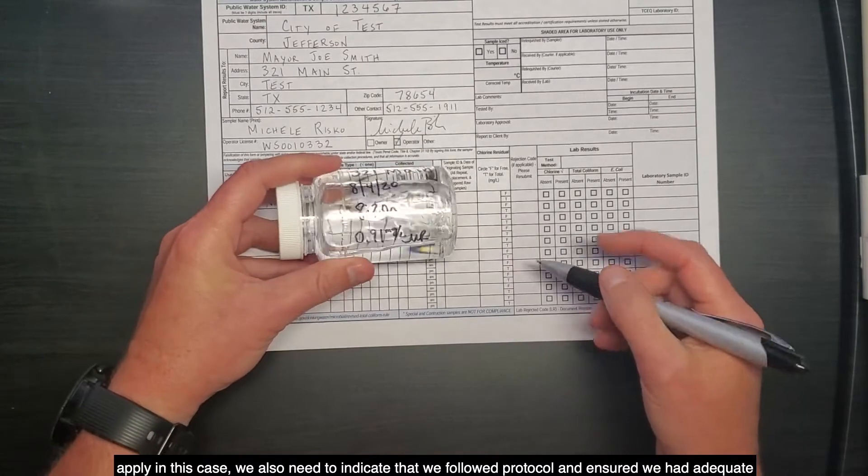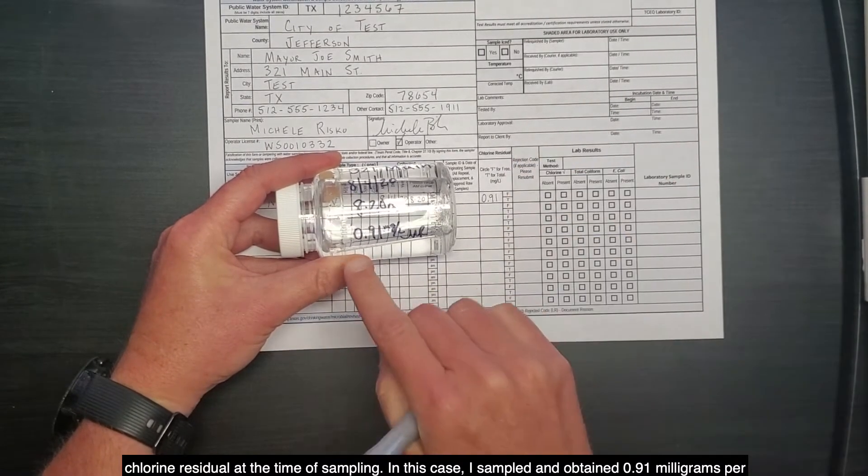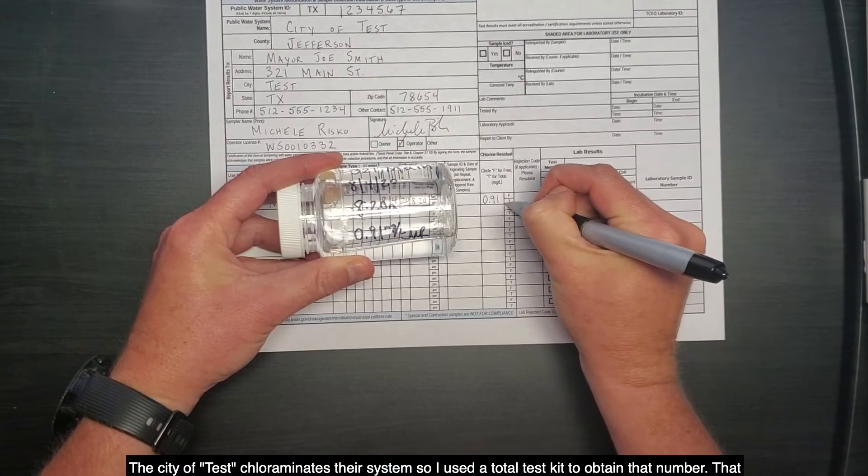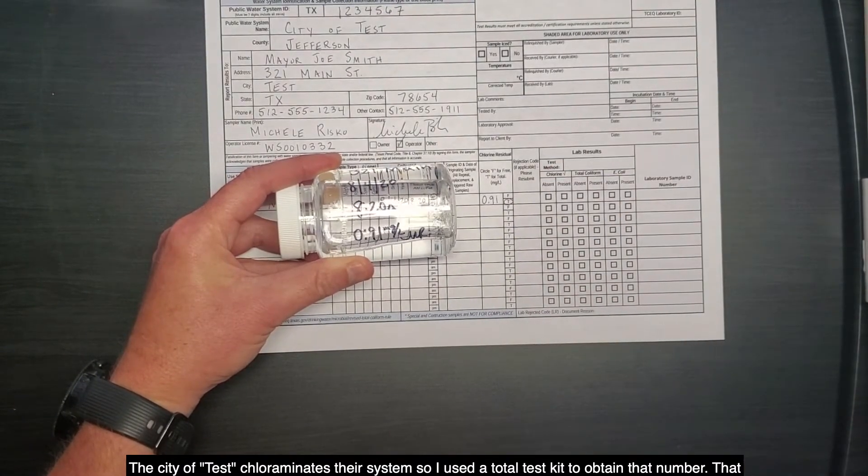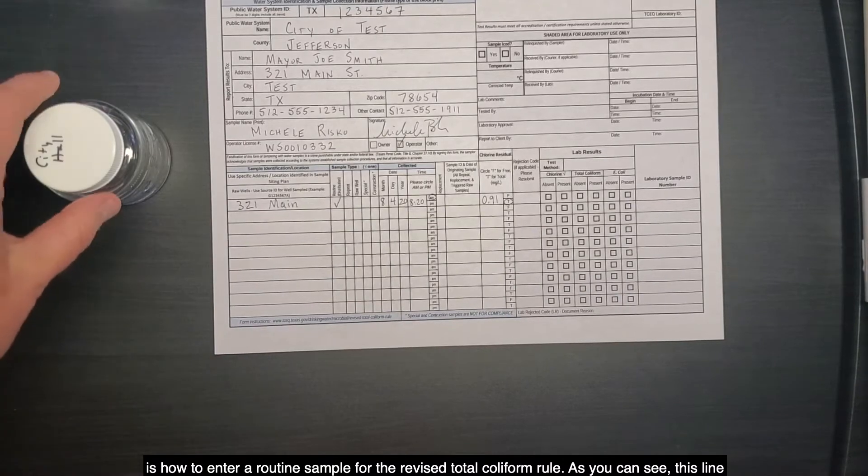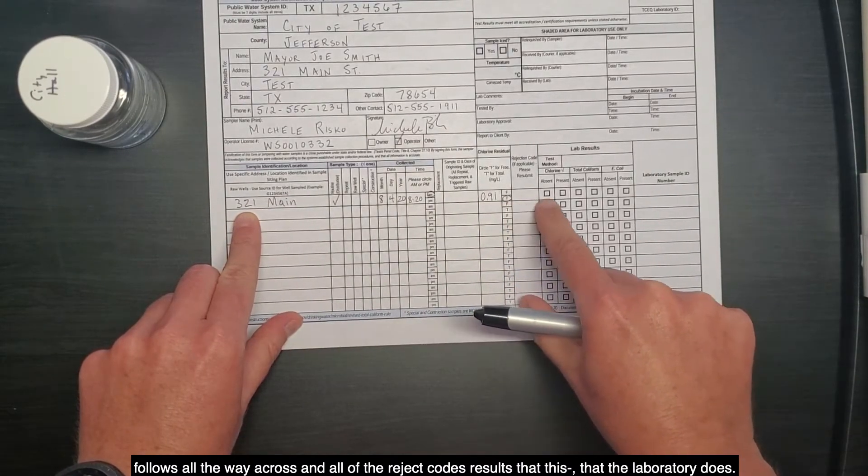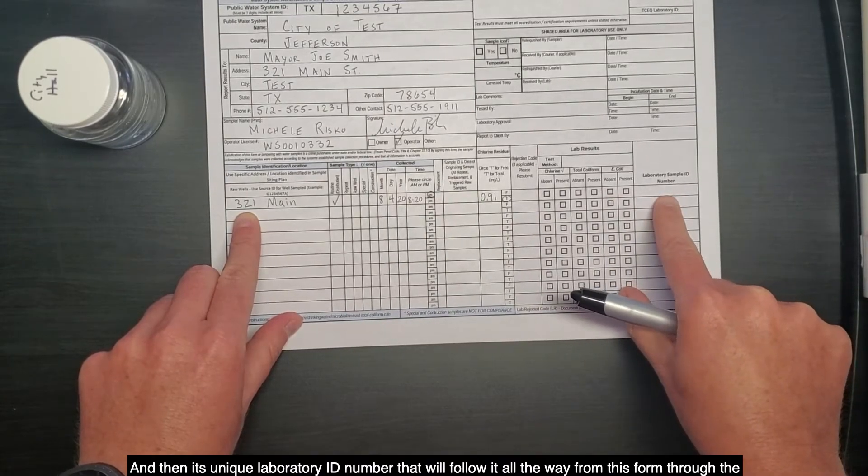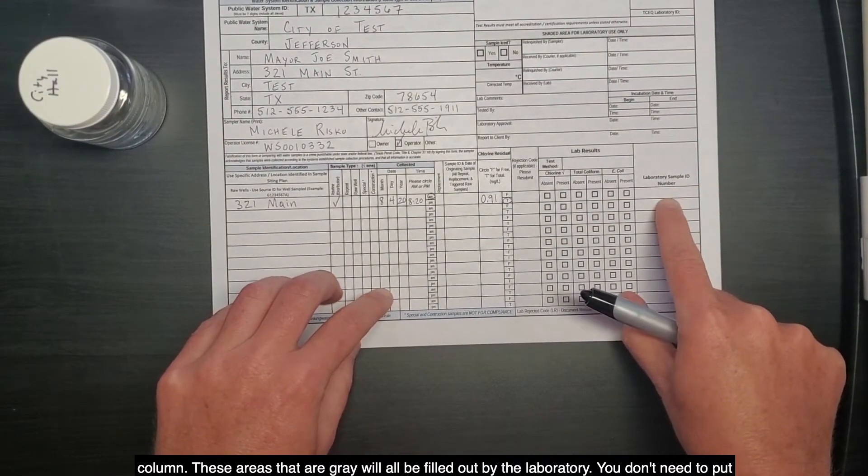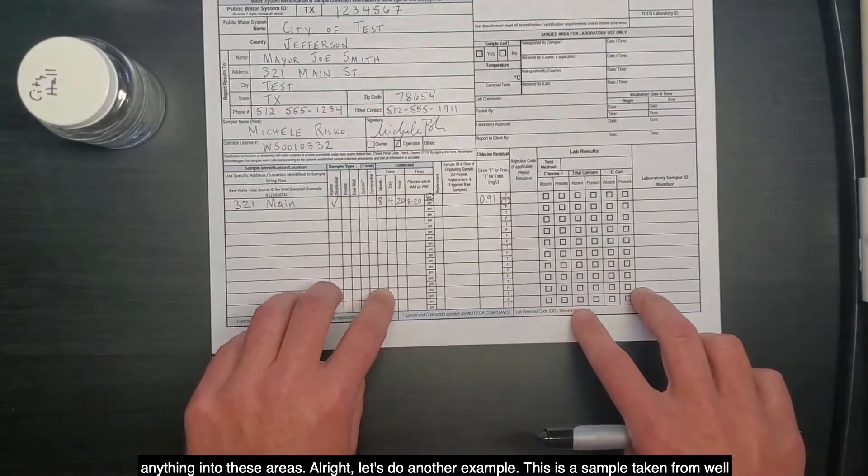We also need to indicate that we followed protocol and ensured we had adequate chlorine residual at the time of sampling. In this case, I sampled and obtained 0.91 milligrams per liter. The city of test chlorinaminates their system, so I used a total test kit to obtain that number. That is how to enter a routine sample for the revised total coliform rule. As you can see, this line follows all the way across and all of the reject codes, results that the laboratory does, and then its unique laboratory ID number that will follow it all the way from this form through the laboratory to the reporting and eventually end up in SIDWIS goes in this far right-hand column. These areas that are gray will all be filled out by the laboratory. You don't need to put anything into these areas.